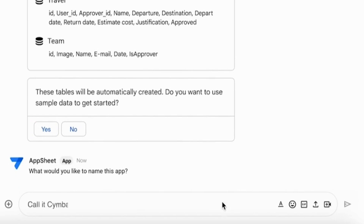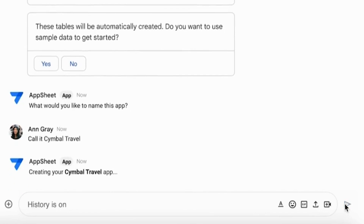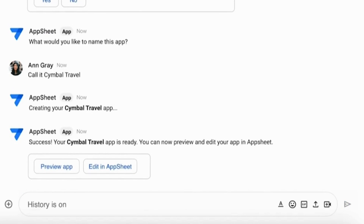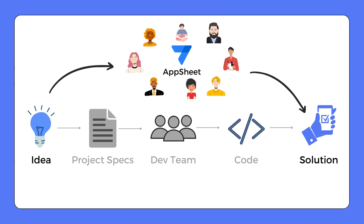Finally, AppSheet prompts Ann to choose a name for her app. Ann calls it Symbol Travel. AppSheet's next response is a link to a fully functional preview of the app that was just created. Through just a few question-and-answer exchanges, AppSheet was able to take Ann's request, written in natural language, and recommended several solutions — including the screens her app users will need, the things they'll need to do, the place for data to be stored, and even set up email notifications. Creating an app through natural language with no coding is now a reality in AppSheet, enabling many new users to develop applications rapidly and efficiently.